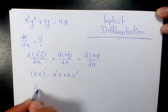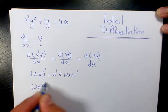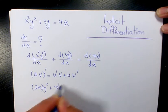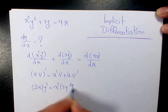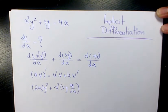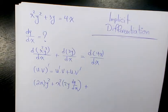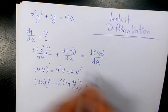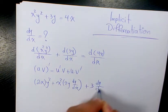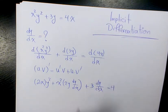So that's going to be 2xy² plus x²(2y) dy over dx plus 3 dy over dx equals 4 times dx over dx which is 1.